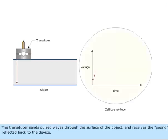The transducer sends pulse waves through the surface of the object and receives the sound reflected back to the device.